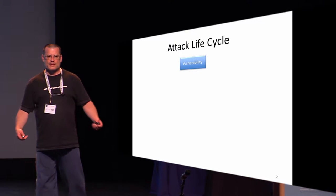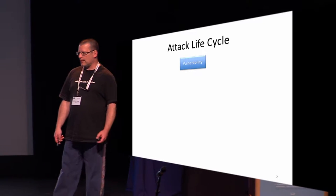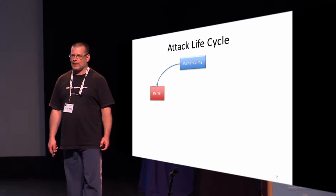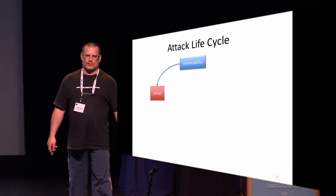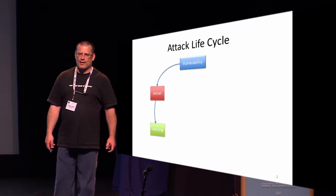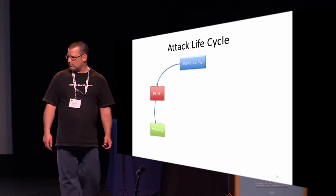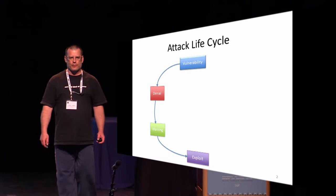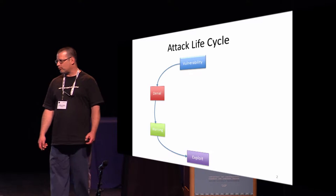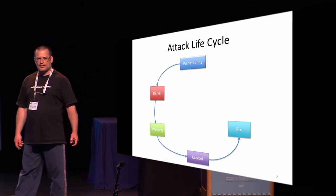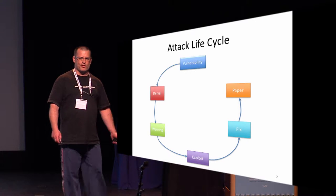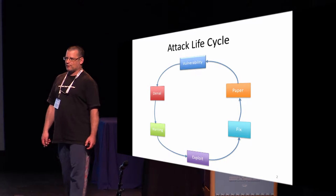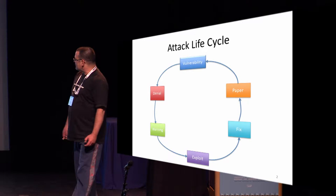When we do attacks, there is a life cycle that we always follow. We start by finding a vulnerability and we tell that something may be vulnerable. And then there is denial: you can't do that, we don't need to fix that, no problem. So someone comes and issues a warning that you need to really fix that. And then someone describes an exploit. When the exploit comes, the vendor fixes the problem. And later someone will publish the paper, probably those who found the exploit. And in that paper, there will be a future work section that discloses another vulnerability. So let's follow this cycle.